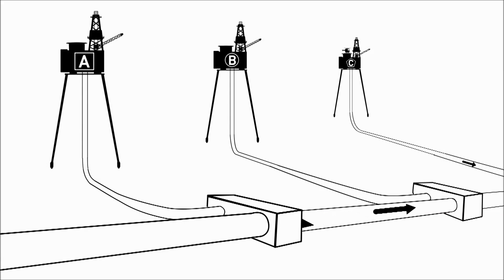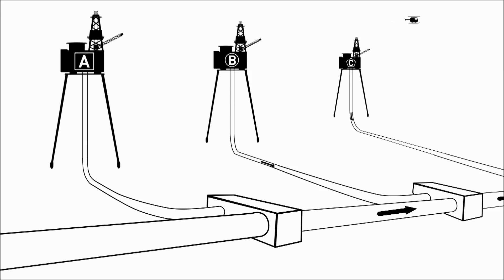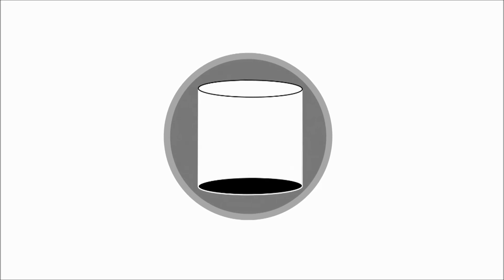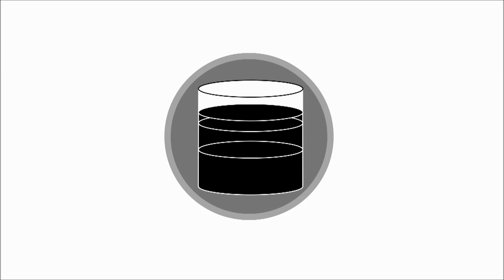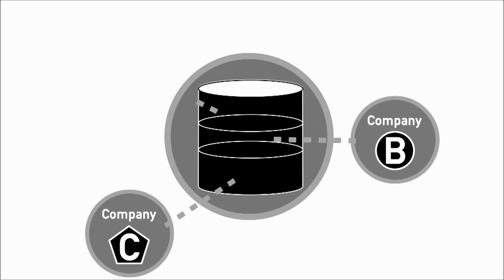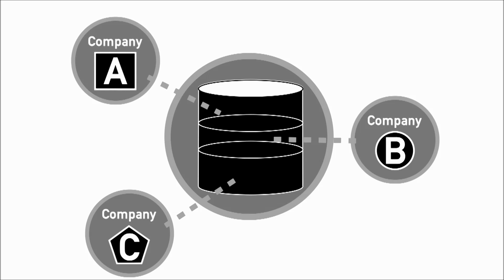Then as the production flows through the pipeline to shore, it joins production from other platforms that share the same pipe. So the single stream of oil in the pipeline contains a mixture of crudes from many different fields, all of different qualities and from different owners. At the onshore terminal, the oil is processed some more, stored in tanks and loaded onto tankers which will take it to refineries around the world. So another task of hydrocarbon accounting is to work out how much of the stream of oil arriving at the terminal belongs to each owner that contributed to it.